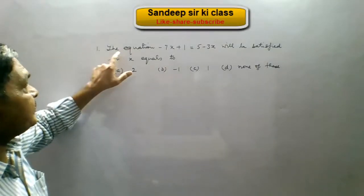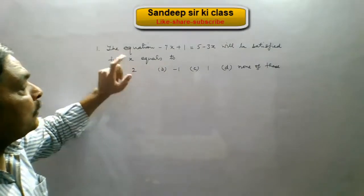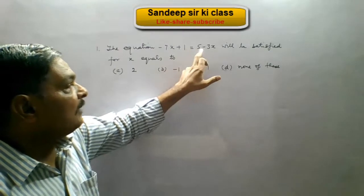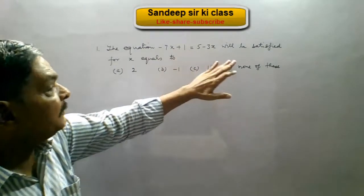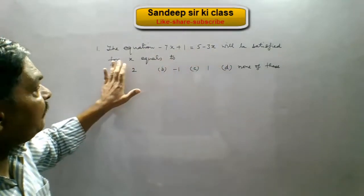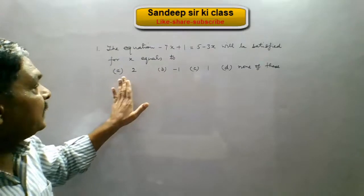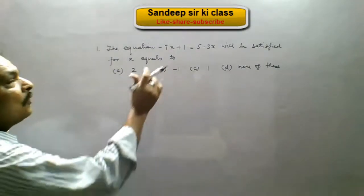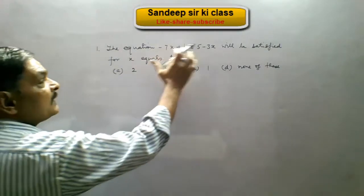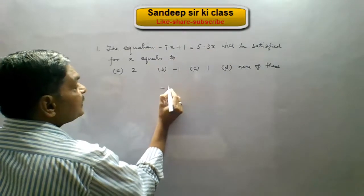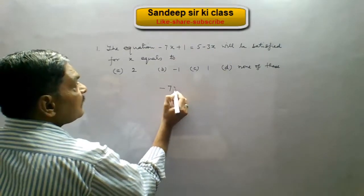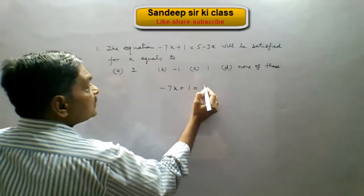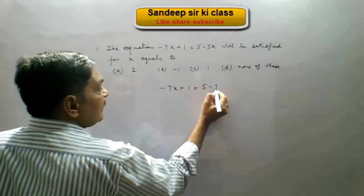Question number 1: the equation minus 7x plus 1 equals 5 minus 3x will be satisfied for x equals 2, and these are the options given to us. Now when we solve this equation, the given equation is minus 7x plus 1 equals 5 minus 3x.